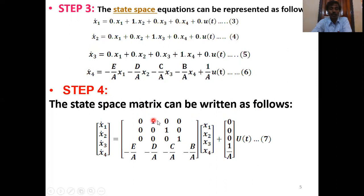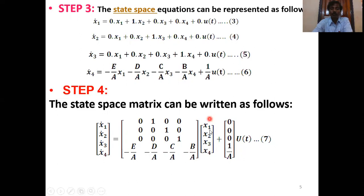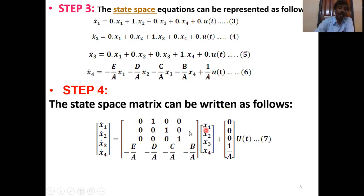These are all the state equations. Step number four: the state space matrix. The state matrix can be written with left-hand side X1-dot, X2-dot, X3-dot, and X4-dot. The A matrix has coefficients arranged with the last row being [−E/A, −D/A, −C/A, −B/A] and ones on the super-diagonal for the first three rows. The B matrix (input coupling) has coefficients 0, 0, 0, 1/A, and U equals U(t). This is the state matrix.